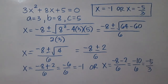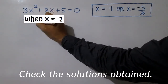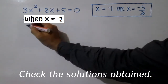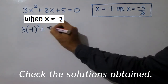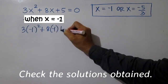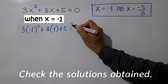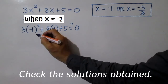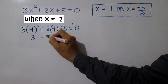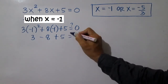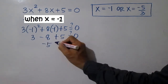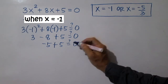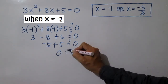Let's check whether both values of x satisfy the given equation. When x equals negative 1: is 3 times the square of negative 1 plus 8 times negative 1 plus 5 equal to 0? Is 3 minus 8 plus 5 equal to 0? Is negative 5 plus 5 equal to 0? 0 equals 0. True.